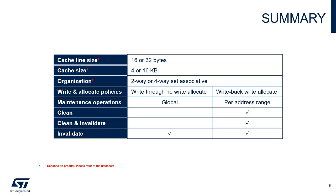Cache line size is 16 or 32 bytes transferred using a burst of 4 or 8 words, with 4 or 16-kilobyte cache and 2-way or 4-way set associative architecture. The data cache implements the following write-allocate policies. Write-through-no-write-allocate: when a store miss occurs, DCache1 and DCache2 are bypassed and data is directly written to memory. Write-back-write-allocate: when a store miss occurs, the cache line is acquired from memory, updated with data received from the processor, and the resulting cache line is written to the data cache with the dirty bit set. Supported maintenance operations are invalidate (global and per-address range), clean and invalidate (per-address range), and clean (per-address range).